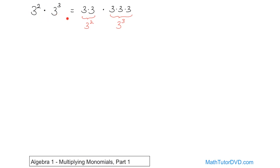Now, how do we simplify these? When you write it out, it's really 3 times 3 times 3 times 3 times 3, which is the same thing as 3 raised to the power of 5, because now you're multiplying 3 by itself 5 times altogether. So it's 3 raised to the power of 5.